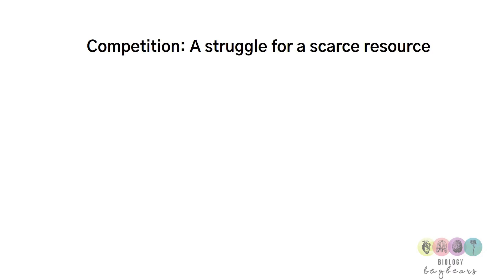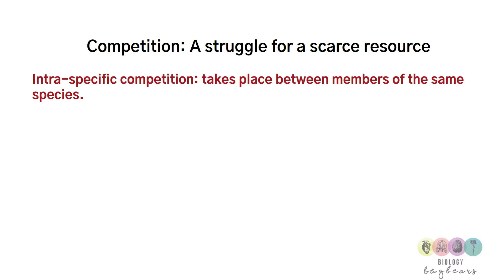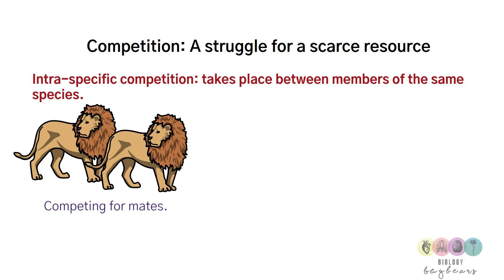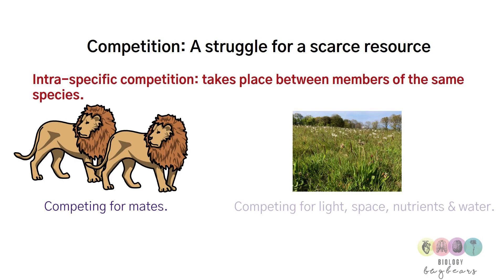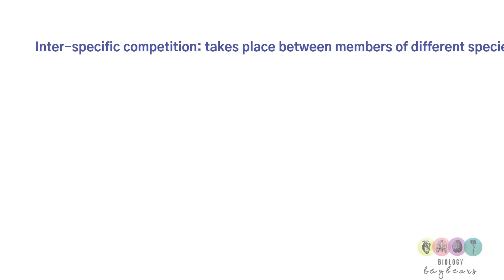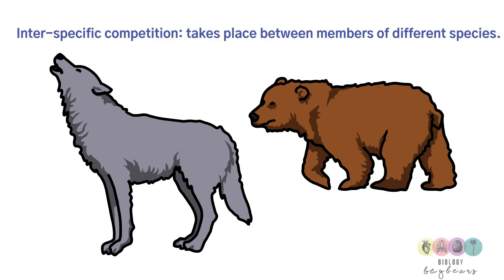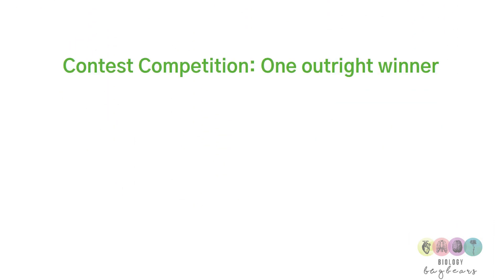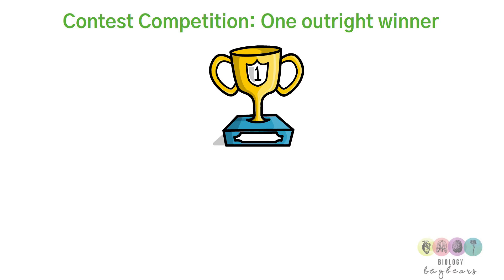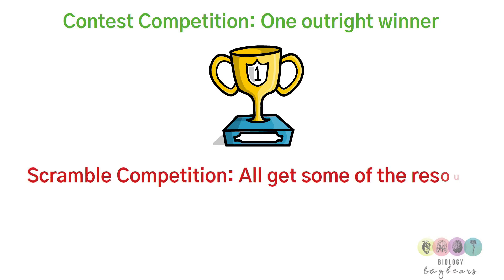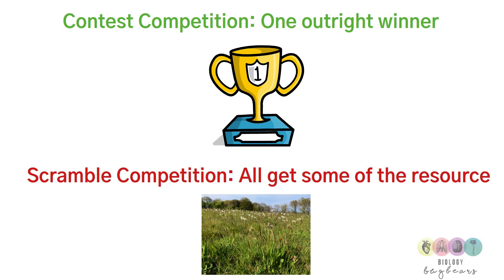Competition is a struggle for a scarce resource. Intraspecific competition is between members of the same species — such as lions competing for mates, or plants competing for light, space, nutrients, and water. Interspecific competition is between members of different species — such as a bear and a wolf competing for the same prey. Contest competition has one outright winner, whereas in scramble competition all get some of the resource but not equally.